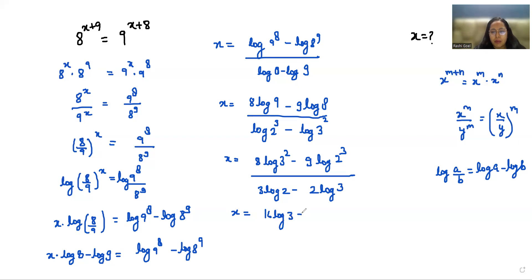By 3 log 2 minus 2 log 3 in the denominator.